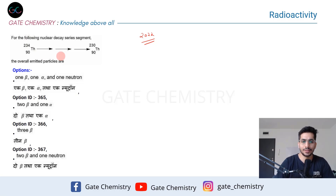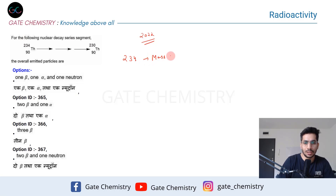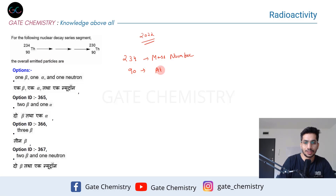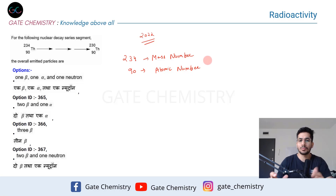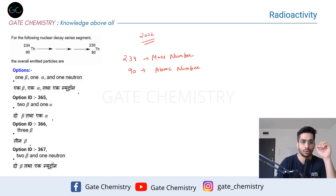Some basics first: the number 234 here is nothing but the mass number. Mass number is comprised of the sum of neutrons and protons. The number 90 here is the atomic number, which is comprised of the number of protons. So atomic number tells us the number of protons, and mass number tells us the sum of neutrons and protons.